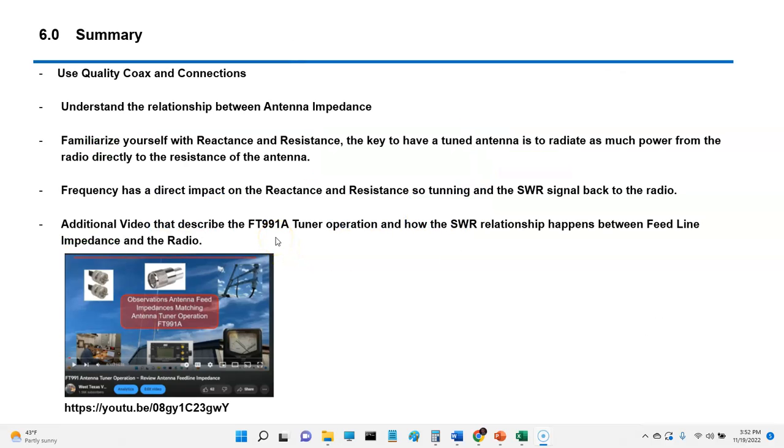So lastly, use quality coax connections. Understand the relationship between antenna impedance. Familiarize yourself with reactance and resistance. The key to having a tuned antenna is to radiate as much power from the radio directly to the resistance of the antenna. And that's important. Resistance is all about radiation, getting the signal out, and that's what we want. Reactance, capacitance, and inductance and stuff, that just generates heat on the transmission line, and it doesn't actually result in any power. So frequency has a direct impact on the reactance and resistance, so tuning the SWR signal back to the radio.